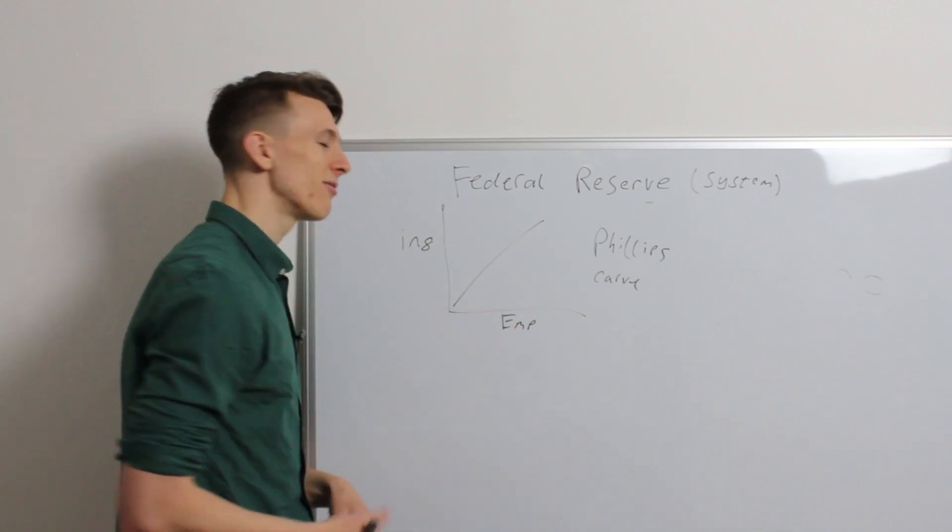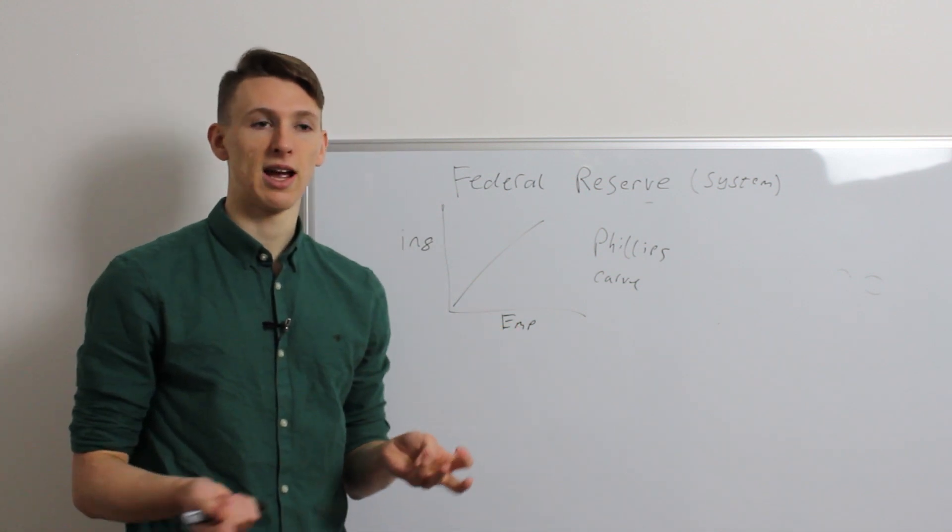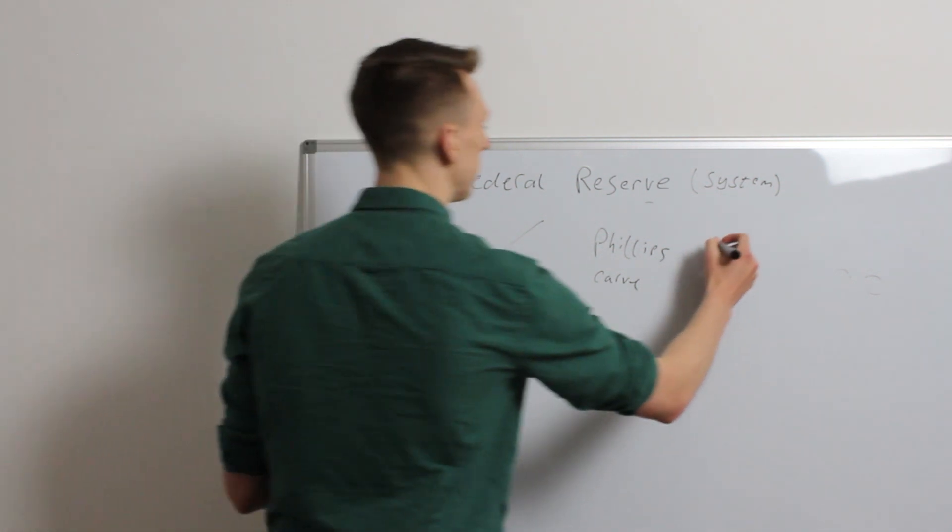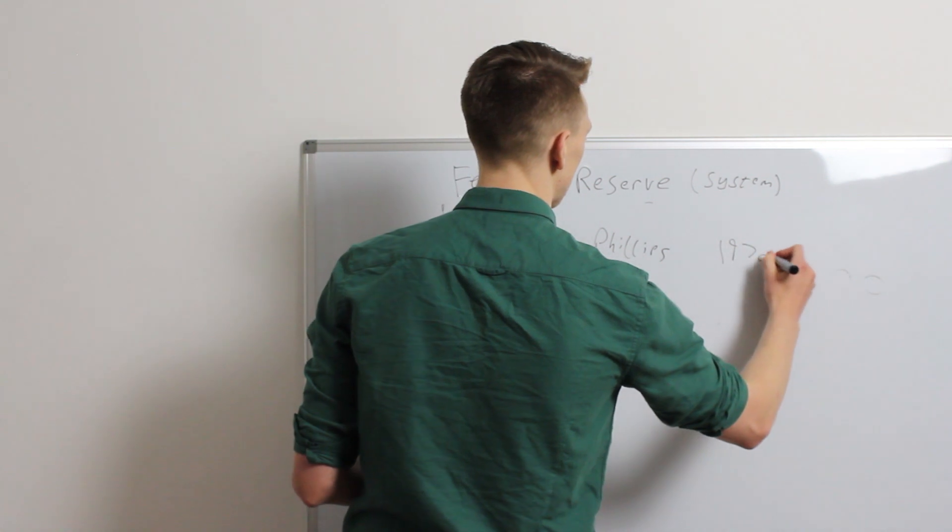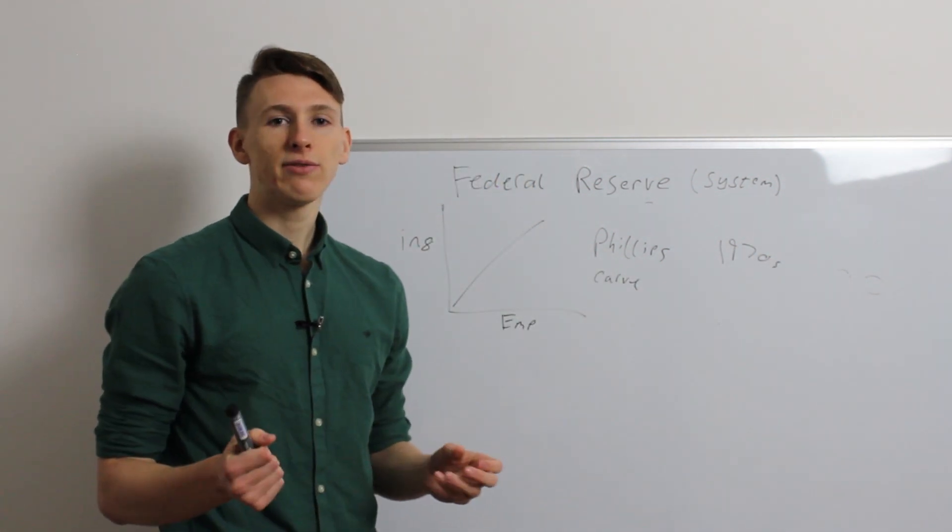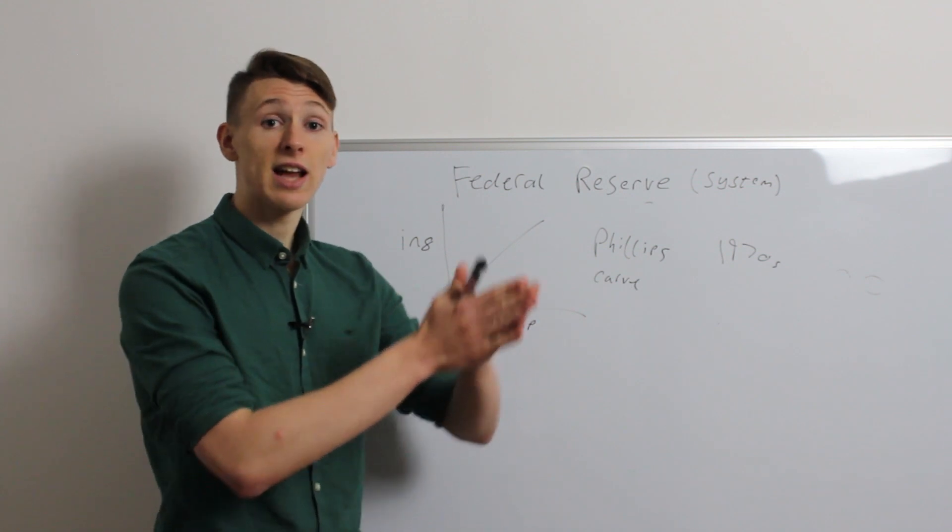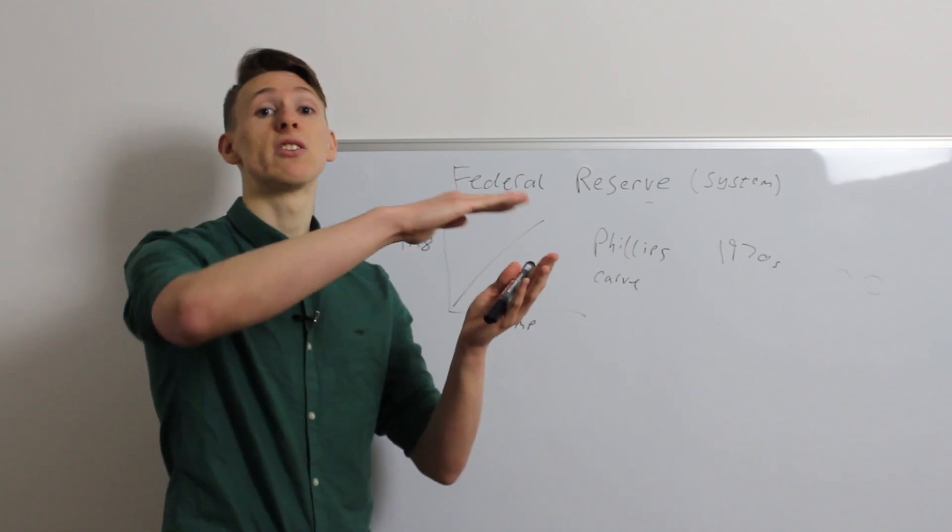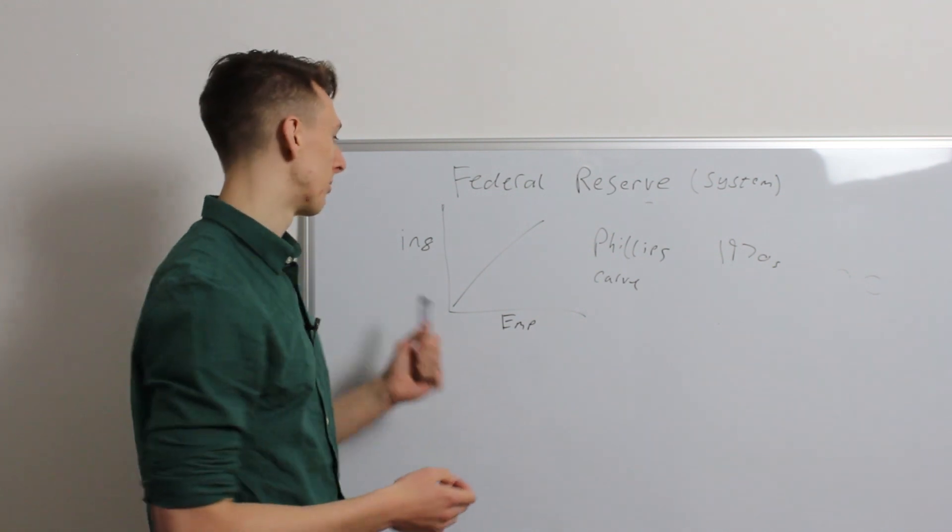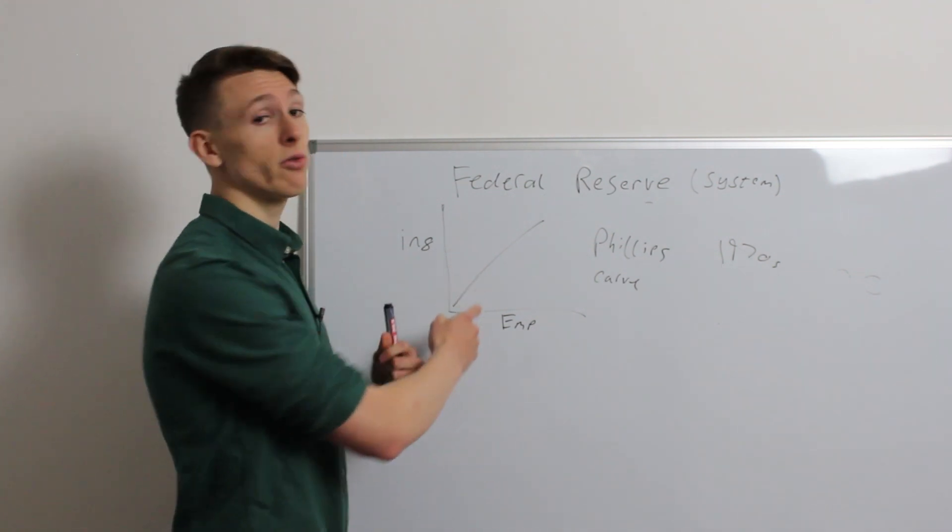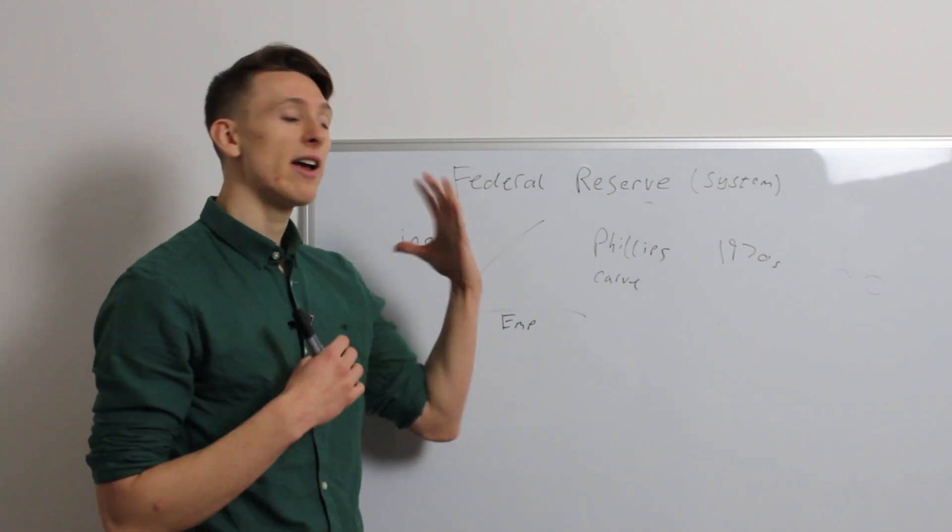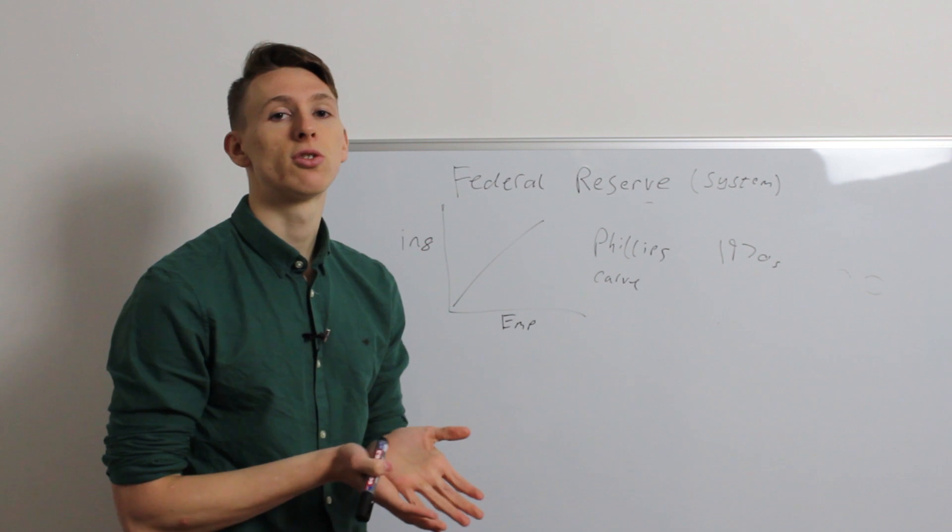But yeah, this isn't really the best model to have a look at how you set policy, because in the 1970s, we had something called stagflation. Stagflation is where the economy stagnates, so stays at the same level, or even decreases, while at the same time having price inflation. So, there's a counter-example to this model.